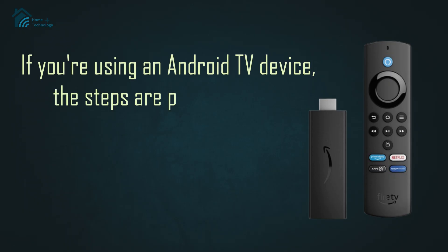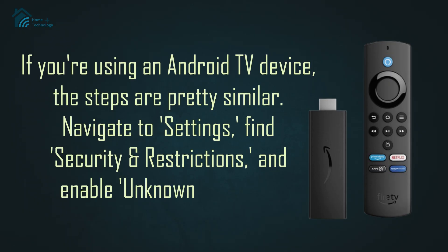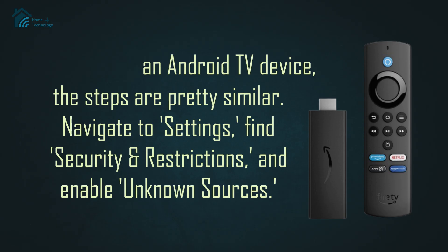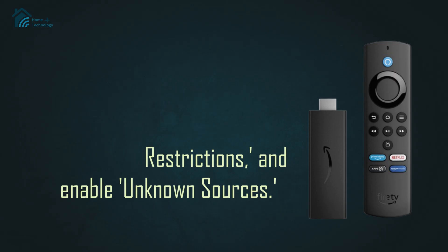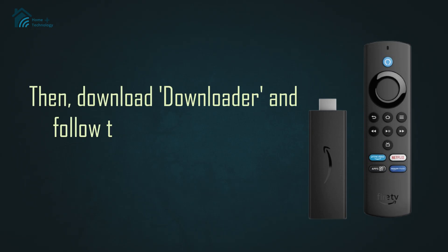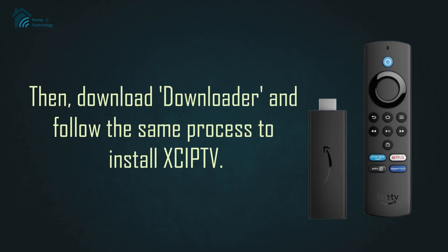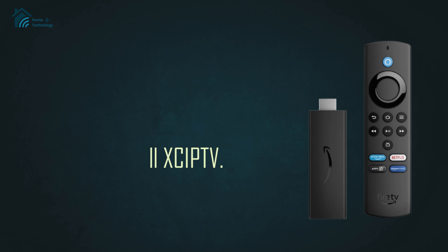If you're using an Android TV device, the steps are pretty similar. Navigate to Settings, find Security and Restrictions, and enable Unknown Sources. Then download Downloader and follow the same process to install XeIPTV.